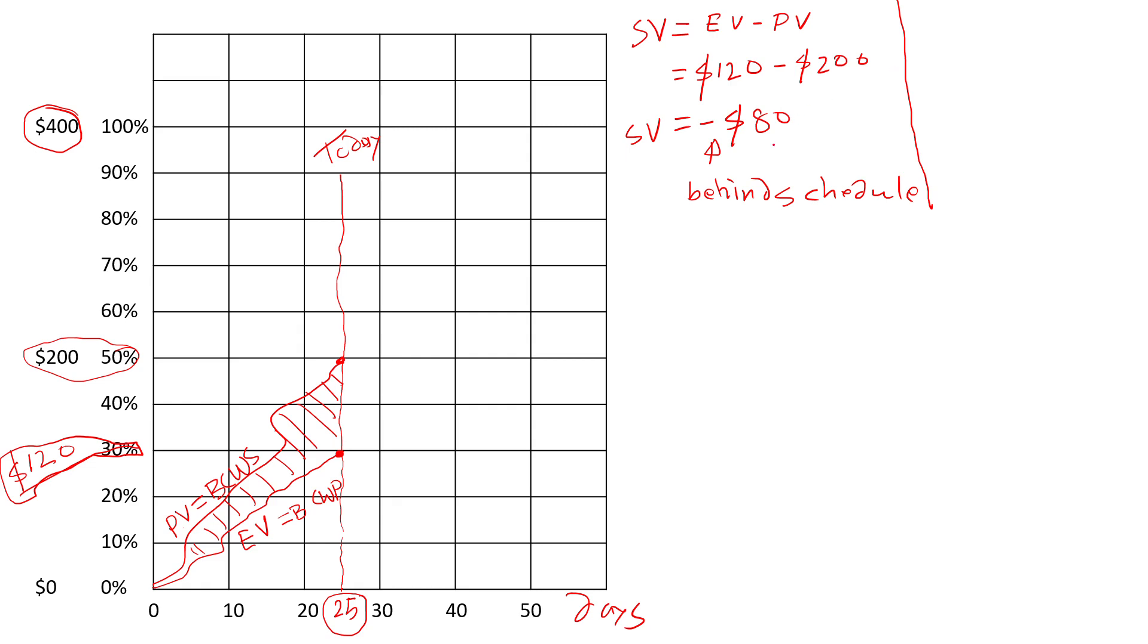A lot of times people, instead of that, use something called index, which is easier to understand, called the schedule performance index. Instead of subtracting, you just simply take the ratio of these two. If the ratio is less than one, that means we are behind schedule. In this case, this is 0.6, less than one, meaning that we are behind schedule. We won't be able to finish this project on time if we continue at this rate.